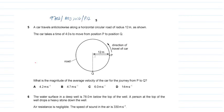9002 May June 2022 Paper 1 Variant 2, Question number 5. A car travels anti-clockwise along a horizontal circular road of radius 12 meters as shown. The car takes a time of 4 seconds to move from position P to Q.